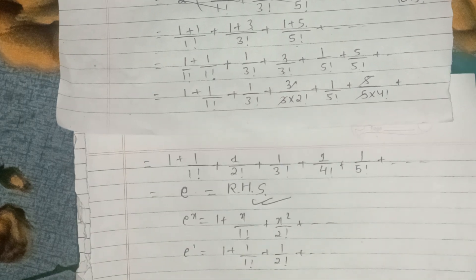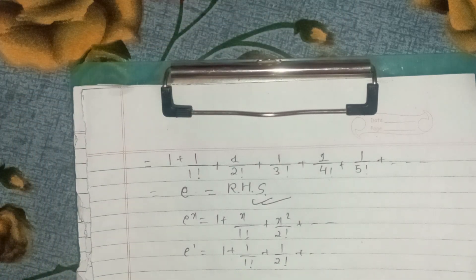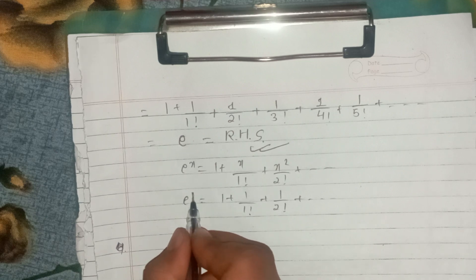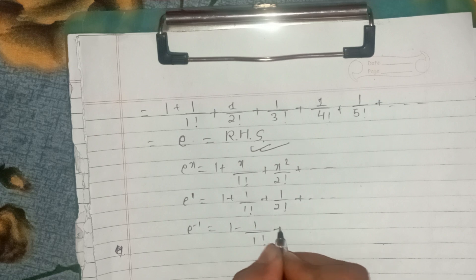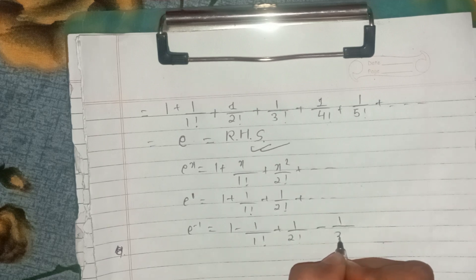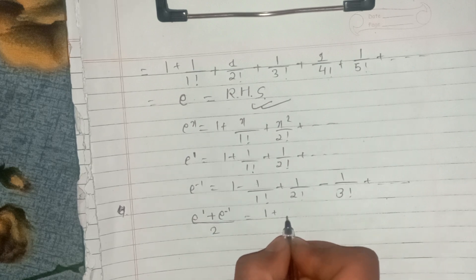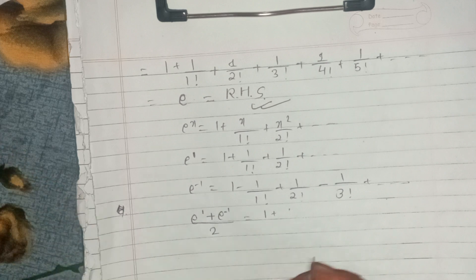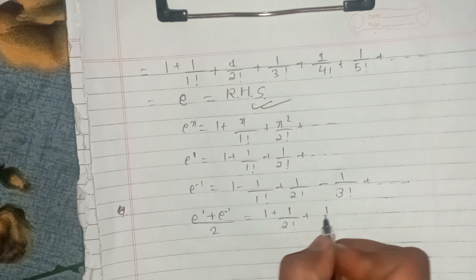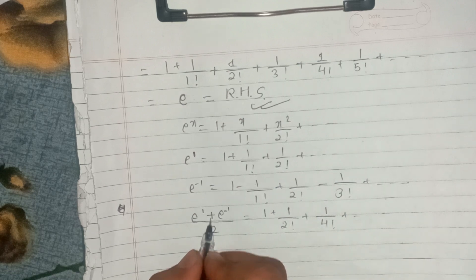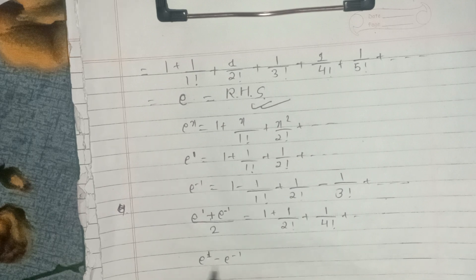We will see 3 numbers. We will break from e to the power 1 and e to the power minus 1. E to the power minus 1 is 1 minus 1 by 1 factorial plus 1 by 2 factorial minus 1 by 3 factorial plus dot dot dot. We can add odd terms or even terms. So 1 by 2 factorial plus 1 by 4 factorial plus dot dot dot equals e to the power 1 plus e to the power minus 1, divided by 2.